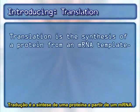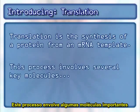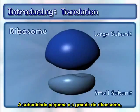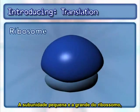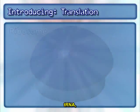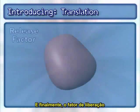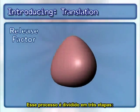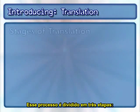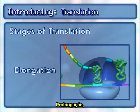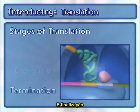Translation is the synthesis of a protein from an mRNA template. This process involves several key molecules, including mRNA, the small and large subunits of the ribosome, tRNA, and the release factor. The process is broken into three stages: initiation, elongation, and termination.